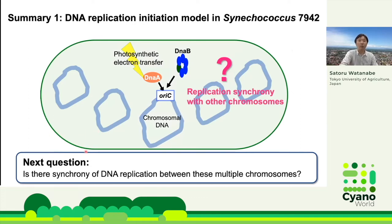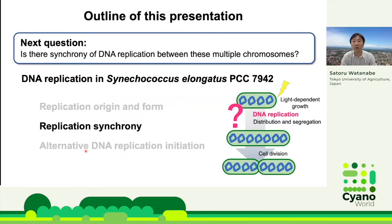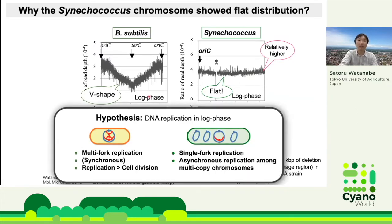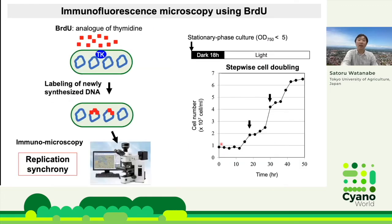Is there a synchrony of DNA replication between these multiple chromosomes? Let's move to the next section: replication synchrony in Synechococcus 7942. Please recall the data implying synchrony of DNA replication — why does Synechococcus show a flat distribution in sequencing analysis? In B. subtilis log-phase cells, multiple replications occur in single-copy chromosomes. If replication in Synechococcus is asynchronous among multi-copy chromosomes, the distribution of sequencing reads might be flat. To verify this hypothesis, we observed replicating cells.